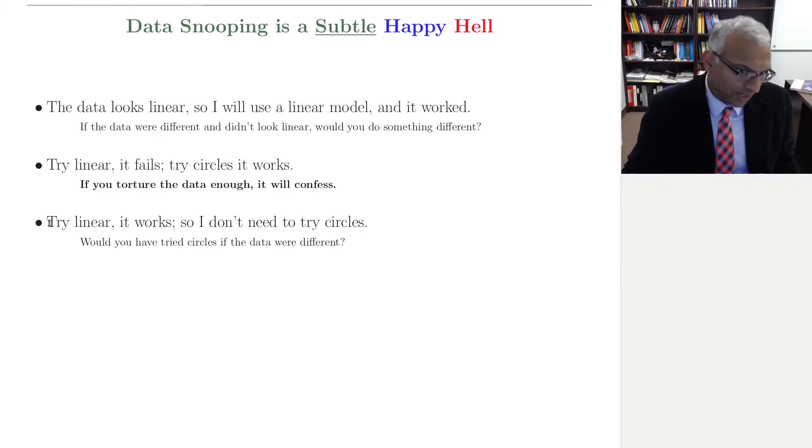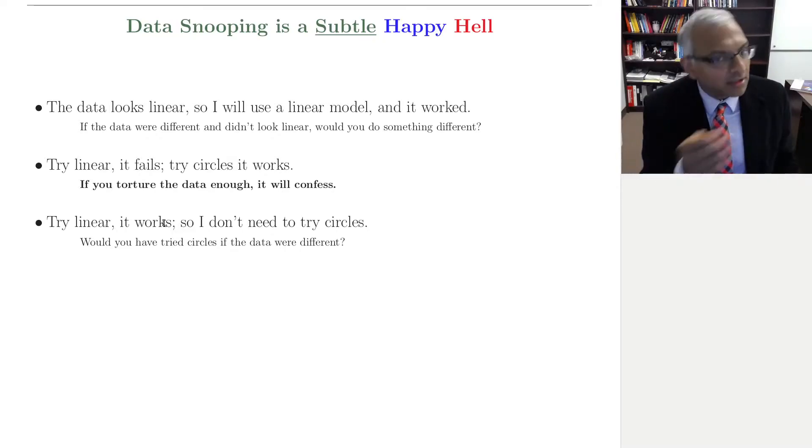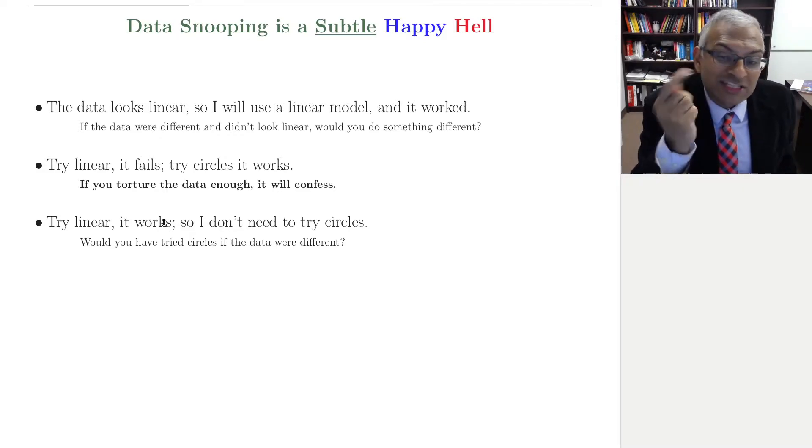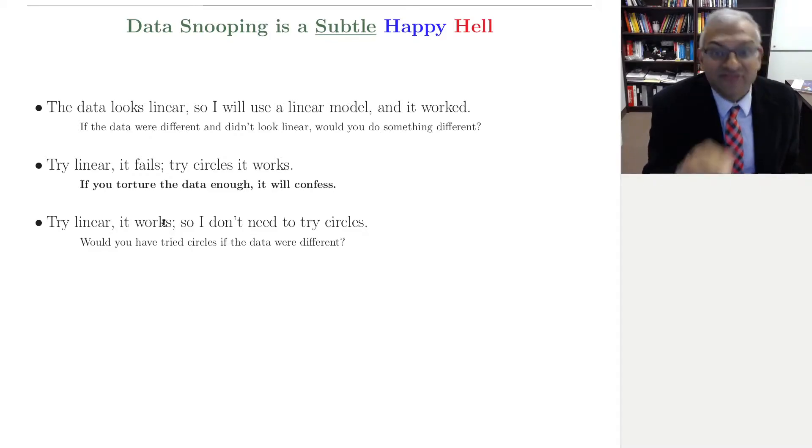Would you have tried circles if the data was different? Yes. So it is a choice that you made. Now, if on the other hand, you had specified that linear was your hypothesis set, and that's the failure condition, things are different. But when you have in the back of your mind the ability to try circles, and then you choose not to, it's because of the data.